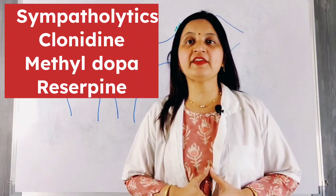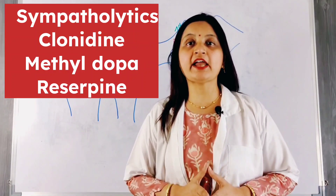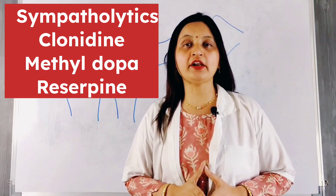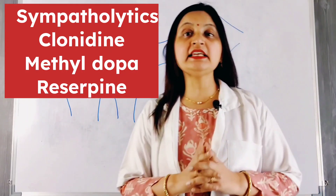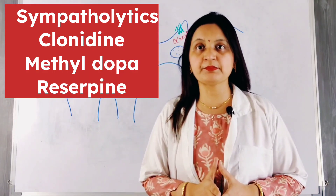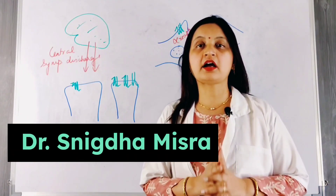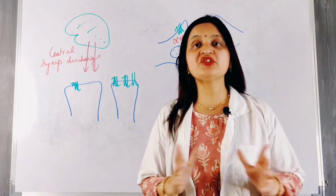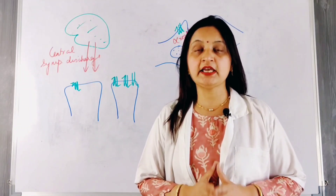In my earlier lectures, we have learned that the sympathetic adrenergic system releases epinephrine and norepinephrine as neurotransmitters. These substances are responsible for controlling the heart rate, the cardiac output, and peripheral vascular resistance, which in turn controls and regulates blood pressure.